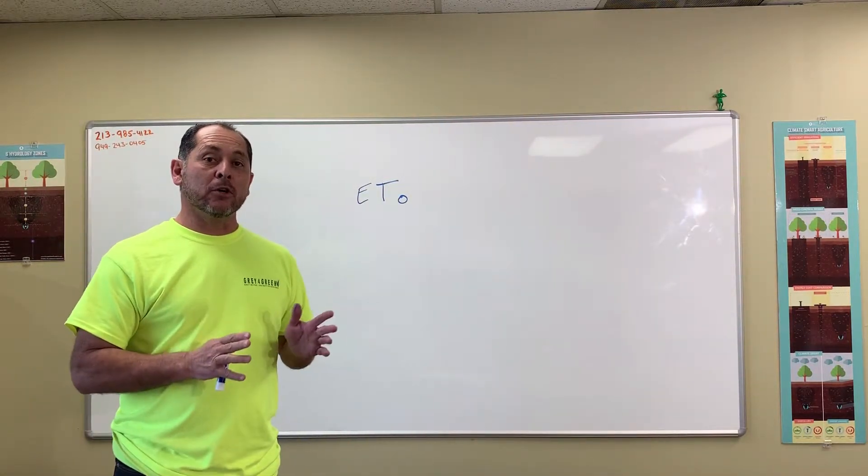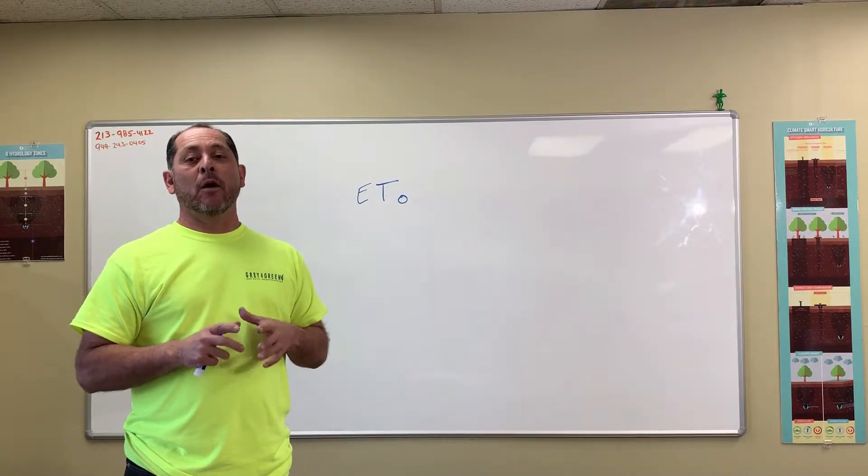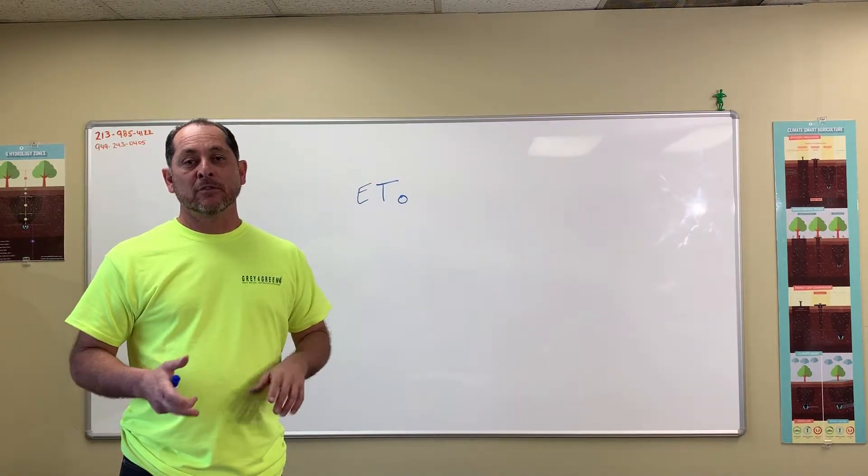Evapotranspiration, or ETO, is the way we measure how much water is needed on the landscape to grow that landscape.